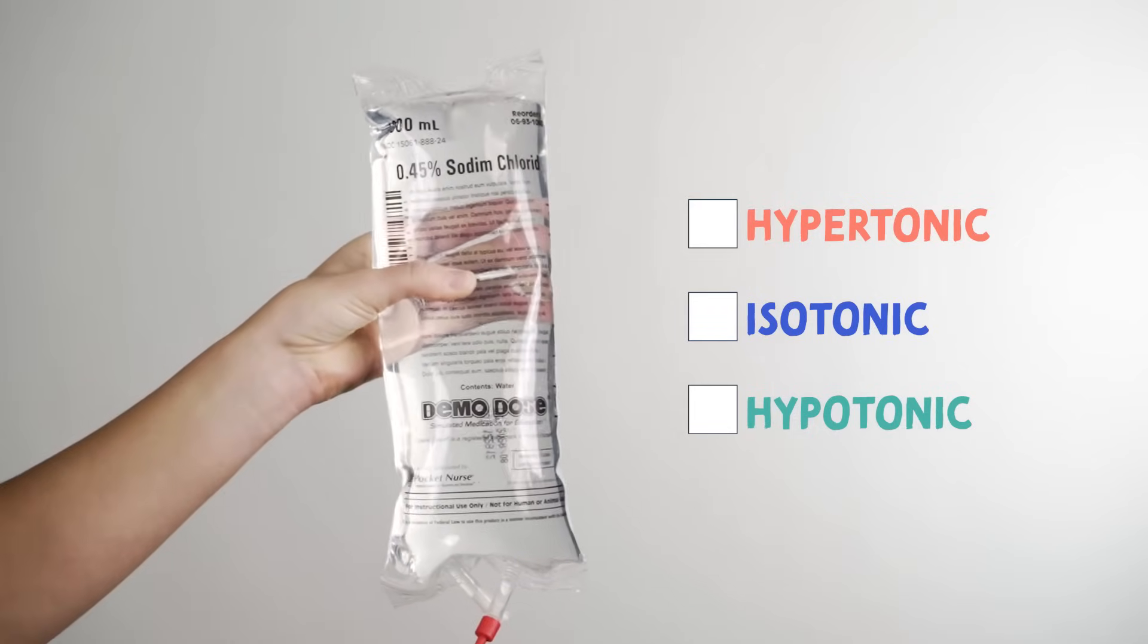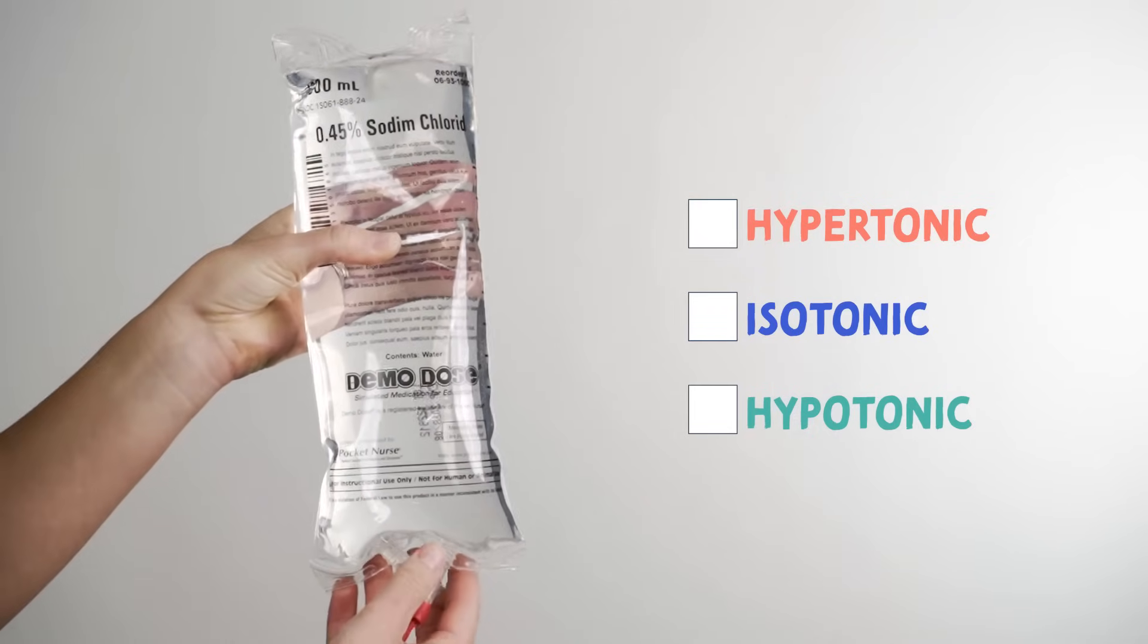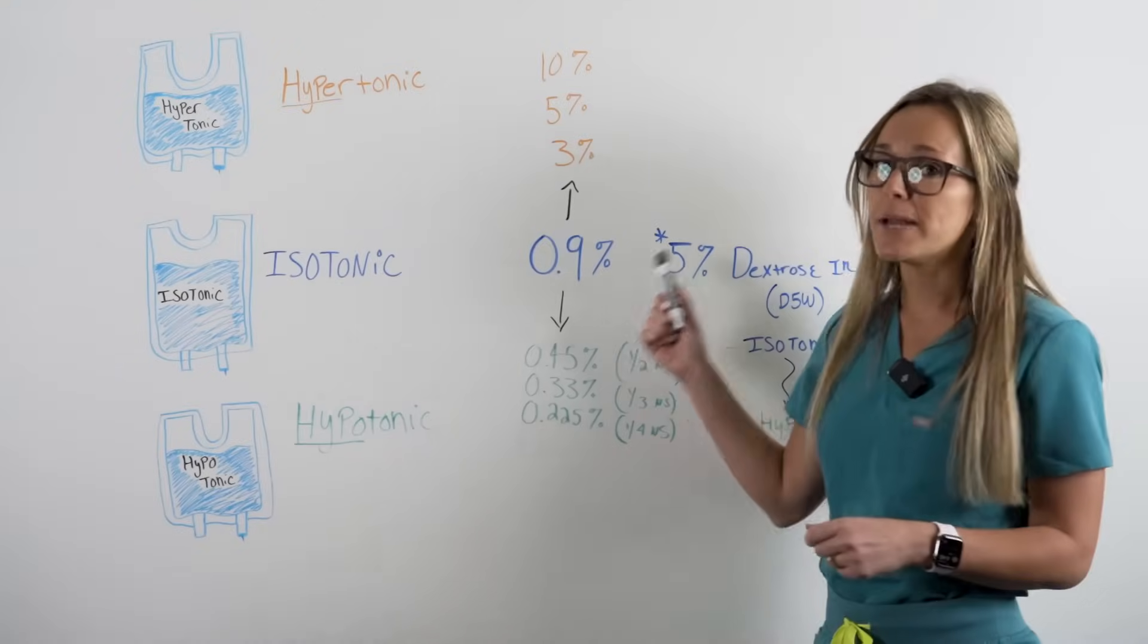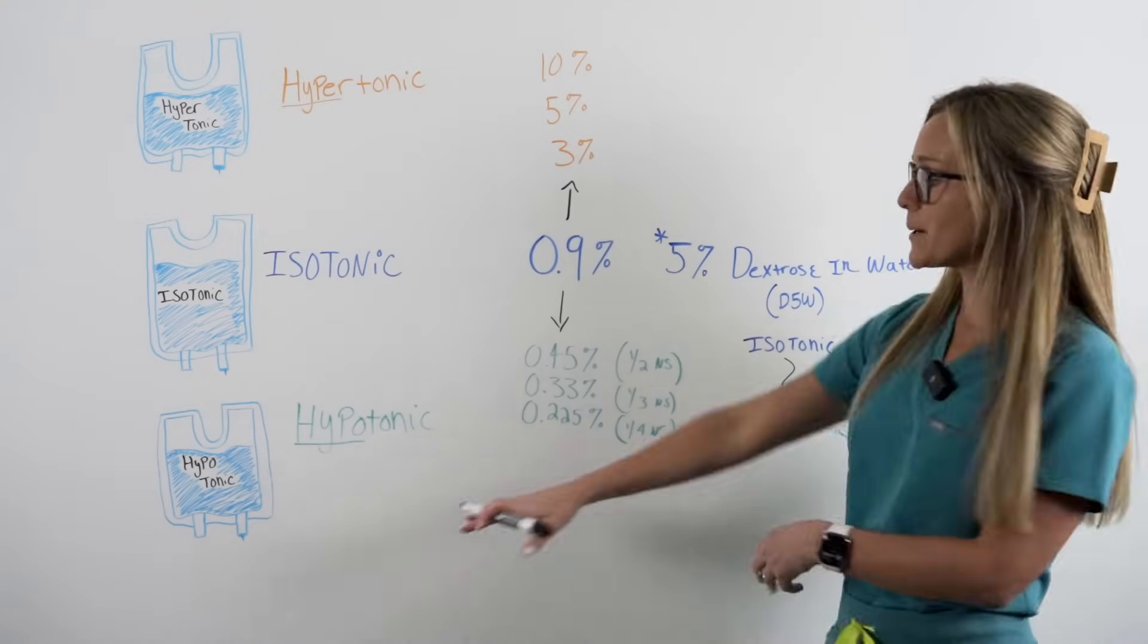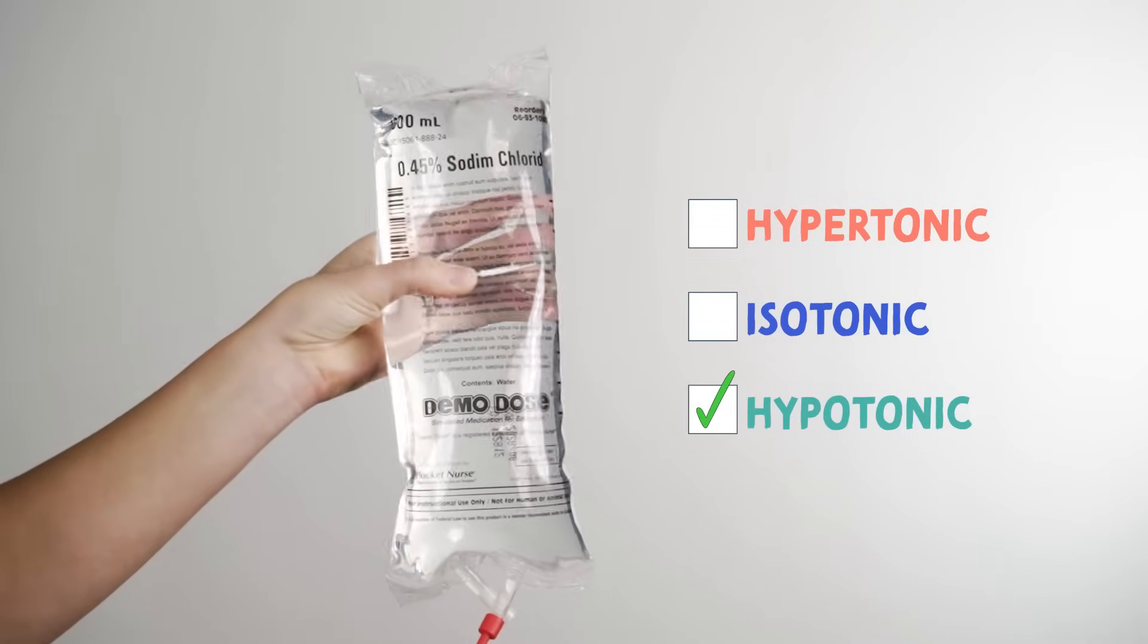Next is 0.45% saline or half normal saline. Looking at our base number, 0.5% is lower than this number, making it a hypotonic solution.